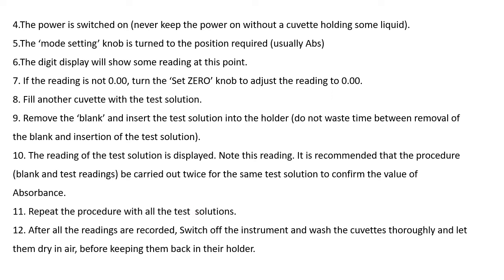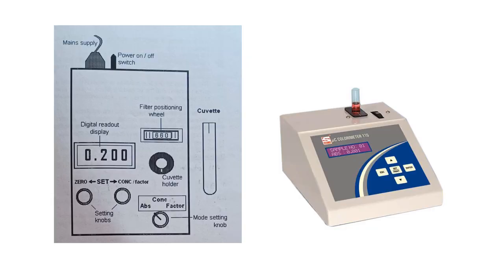After all readings are recorded, switch off the instrument first before removing the cuvettes. Then wash the cuvettes thoroughly and let them dry in air before storing them back in the holder. The colorimeter has a power on/off switch, filter positioning wheel, cuvette holder, digital readout display, set-zero knob, set-concentration-factor knob, and mode setting knob.